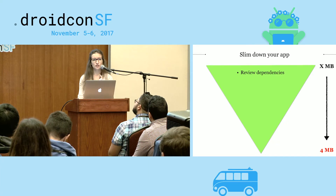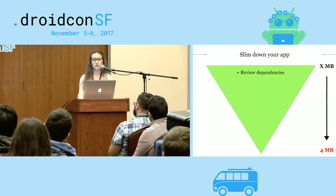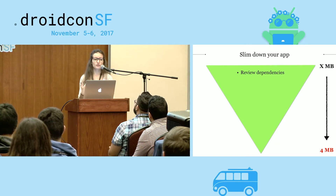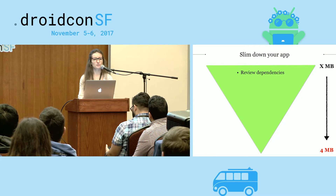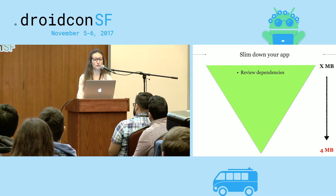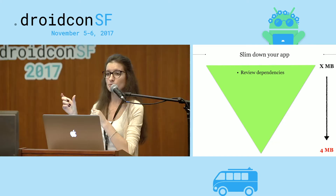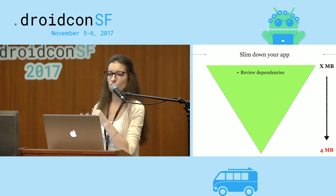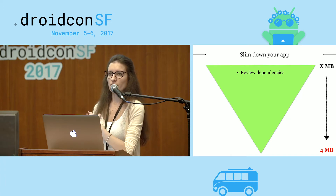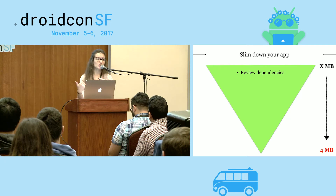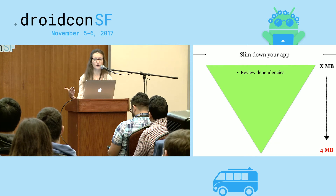There is a list of features not currently supported in Instant Apps — including notifications, external storage access, and some issues with content providers — available on the official Google Docs site. If you use a feature not supported in Instant Apps, try to rip it off from your Instant application. You can do this using different flavors or build types. For example, notifications are not supported — at Jet.com we used Appboy SDK, so we just removed it from the Instant application and kept it only in our regular installable application.